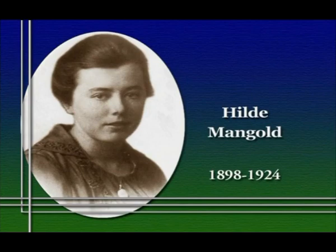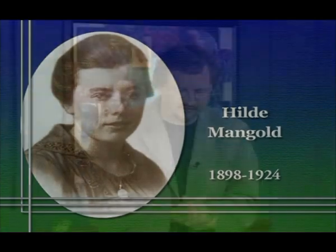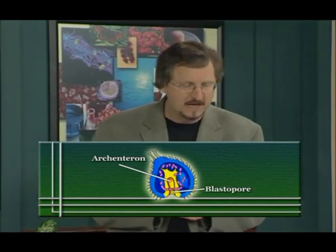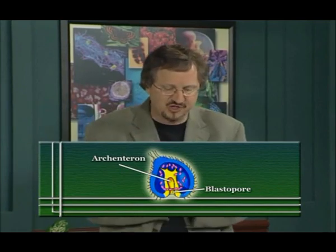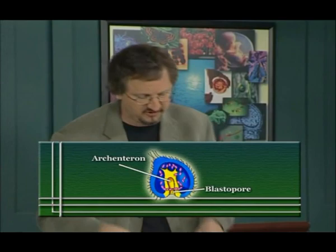Spemann's most important experiment was done in 1924 in collaboration with a young student named Hilda Mangold. Mangold's Ph.D. thesis was designed to look at how transplant experiments affected tissues coming from a very particular region of the newt gastrula: a region called the dorsal lip of the blastopore. The blastopore of a gastrula is the opening to the primitive gut region, what we called the archenteron. The dorsal lip of the blastopore is simply the side of this structure on the side of the embryo that will eventually become the dorsal surface. Observational studies had suggested that this particular region appeared to have its developmental fate determined very, very early on — much earlier than the other tissues in the gastrula. So they wanted to know what was special about this particular tissue, and that was to be Hilda Mangold's project.